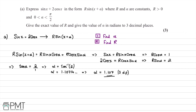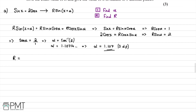Step two is to find r. We have that r equals the square root of the coefficient of sin x squared plus the coefficient of cos x squared. So r equals the square root of 1 squared plus 2 squared, which is the square root of 1 plus 4, giving us root 5.